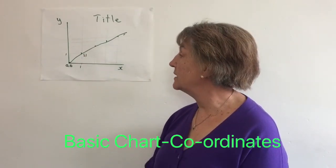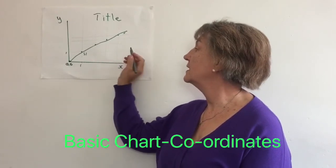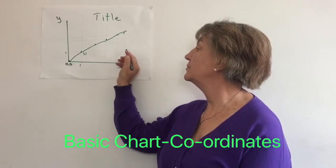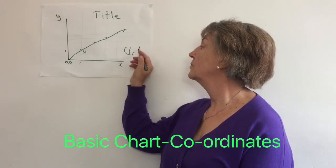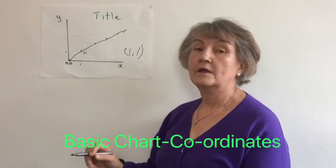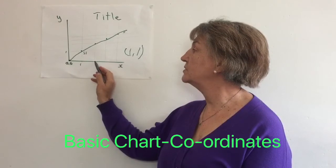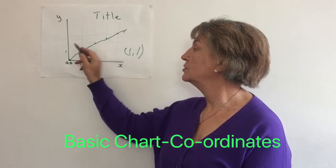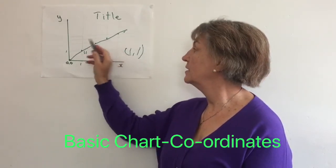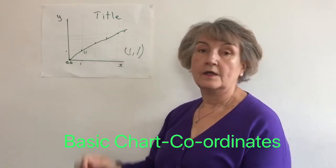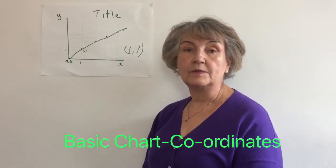So normally what you do is you put brackets — you mention them like this: (1, 1). And this is how you plot the curve. So here it would be (2, 2), (3, 3). That was the one about coordinates.